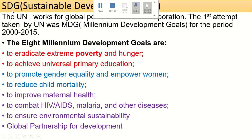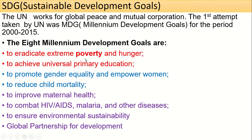Before discussing SDG, there were MDG — Millennium Development Goals — for global peace and mutual cooperation. The first attempt taken by the UN was MDG, for the period from 2000 to 2015. There are eight goals of MDG.